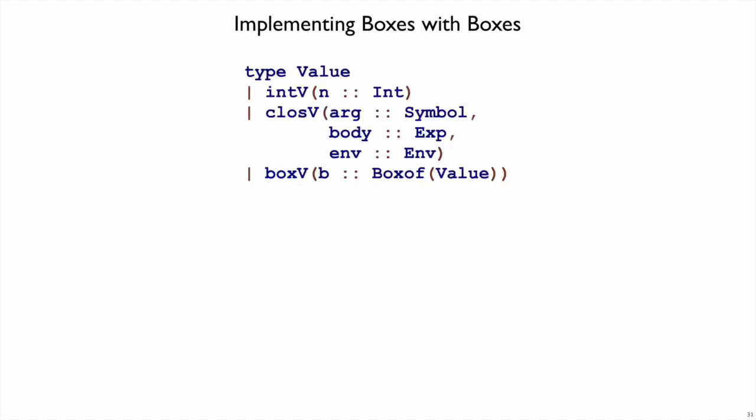Well we can use what shplate gives us for being able to change the value inside of an object. We can use a shplate box to implement a mo box. So we change our value data type, which already had int v and close v, to have a box v.